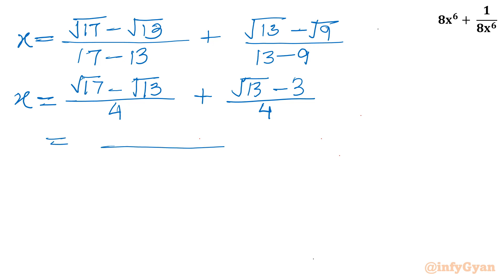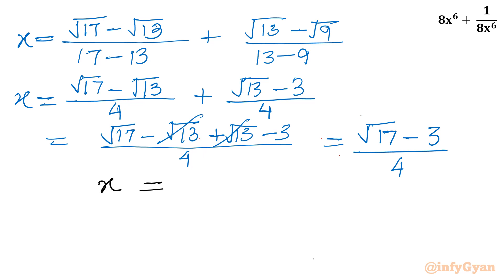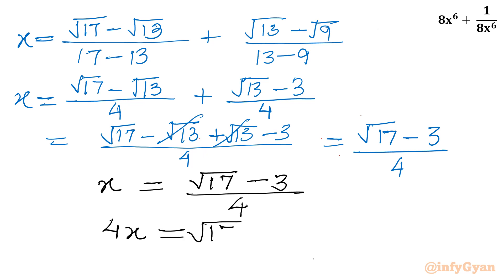Since the denominator is the same, let's take LCM and simply add all the terms from the numerator: √17 − √13 + √13 − 3. We can cancel the +√13 and −√13, leaving only √17 − 3 over 4. So x = (√17 − 3) / 4. Multiplying both sides by 4 gives 4x = √17 − 3.